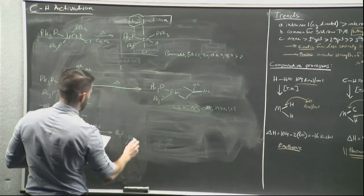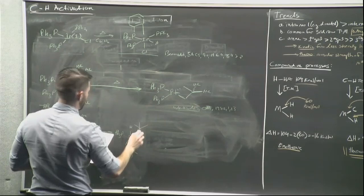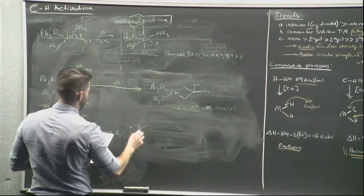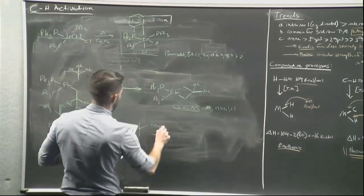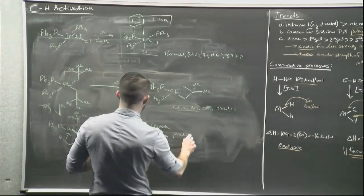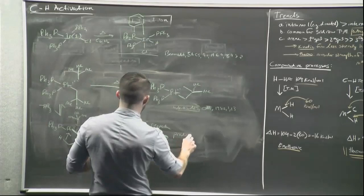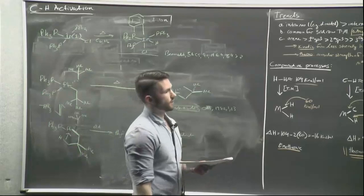After the agostic interaction and oxidative addition, reductive elimination occurs — you lose neopentane — and then another triphenylphosphine comes in, giving you the cyclometallated product. This illustrates the full mechanism for this Whitesides 1982 organometallics example.